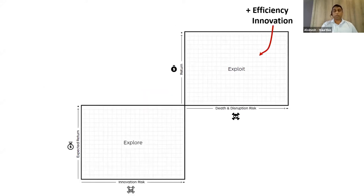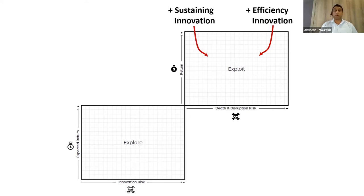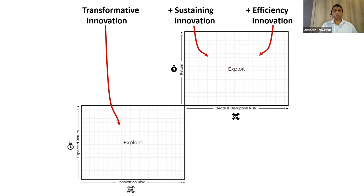There are three types of innovations that normally happen within an organization. When you are in the exploitation phase, you often find efficiency innovation — making a process more effective by optimizing it. You have sustaining innovation, which tries to extend the life cycle of a product. And then in the exploration phase, you have transformative innovation, because there you are really trying to find new avenues to generate revenue.